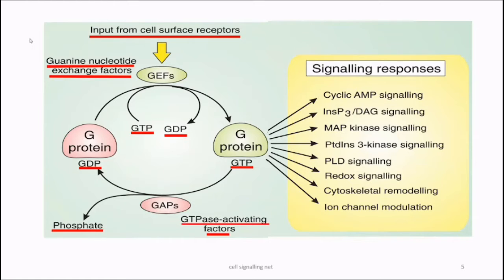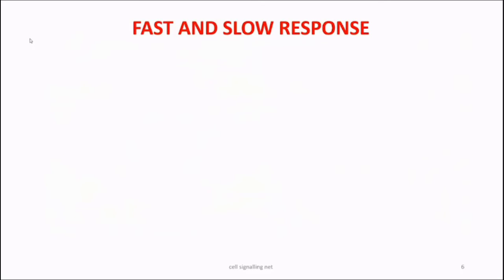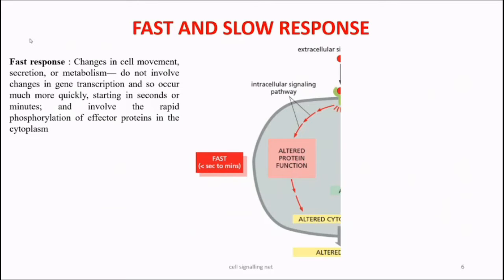For example, as seen in the diagram: cyclic AMP signaling, inositol DAG signaling, MAP kinase pathway, PLD signaling, and others. When a signal arrives, it changes either the phosphorylation state or the GTP/GDP-bound state of cytoplasmic proteins. This change in protein activity directly alters other cytoplasmic protein functions, regulating cell behavior and cellular physiology.